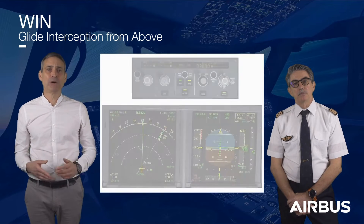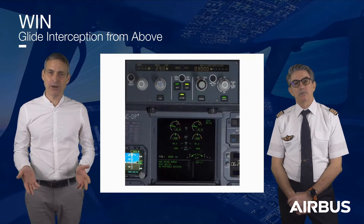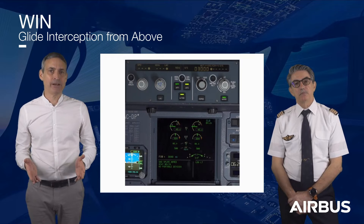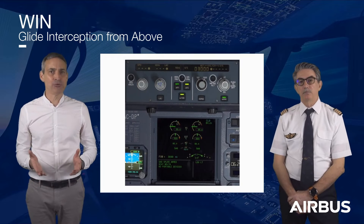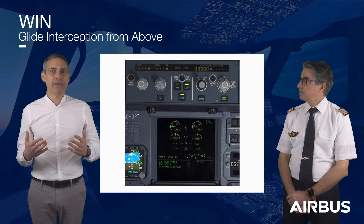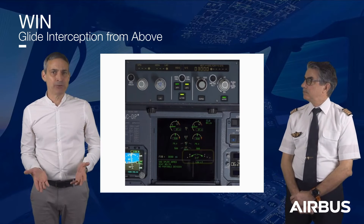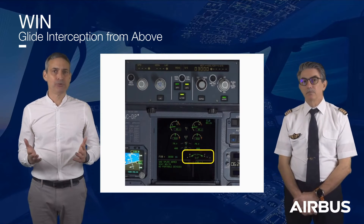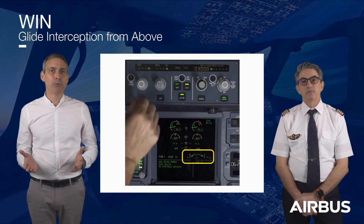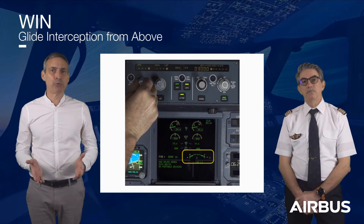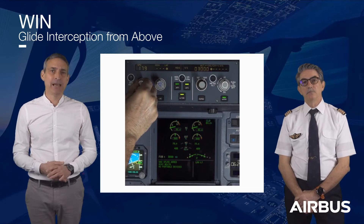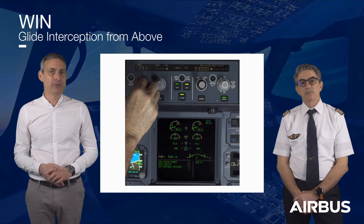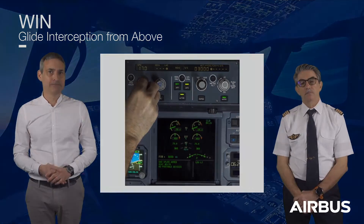In order to have the best rate of descent, the pilot flying will adjust the aircraft configuration to at least Config 2 with an appropriate speed, and if required, lower the landing gear.